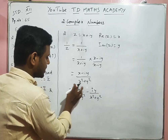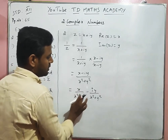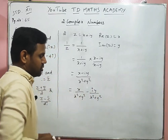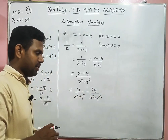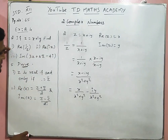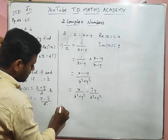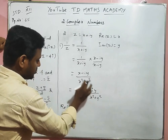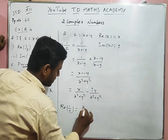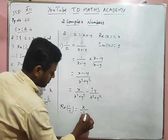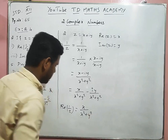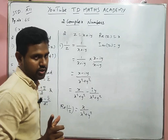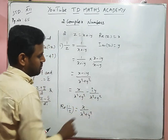So the real part of 1/z is x/(x² + y²), and the imaginary part of 1/z is -y/(x² + y²).